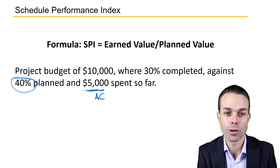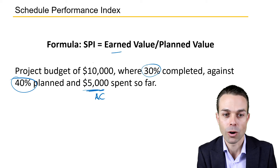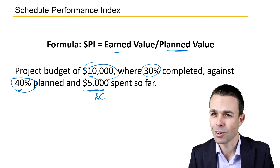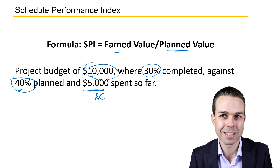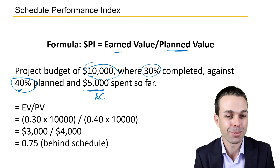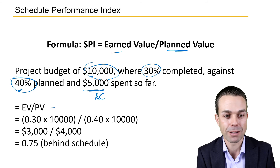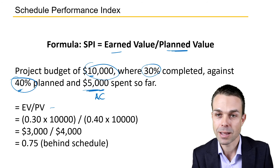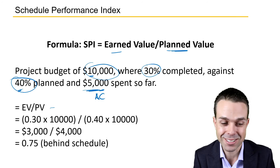Remember, it is Earned Value — our 30% of $10,000 — divided by the Planned Value, which is 40% of $10,000. We've used nice round numbers to make it a little easier. Hopefully we don't need a calculator for this one. EV divided by PV gives us 30% of $10,000 which is $3,000, and 40% of $10,000 which is $4,000.